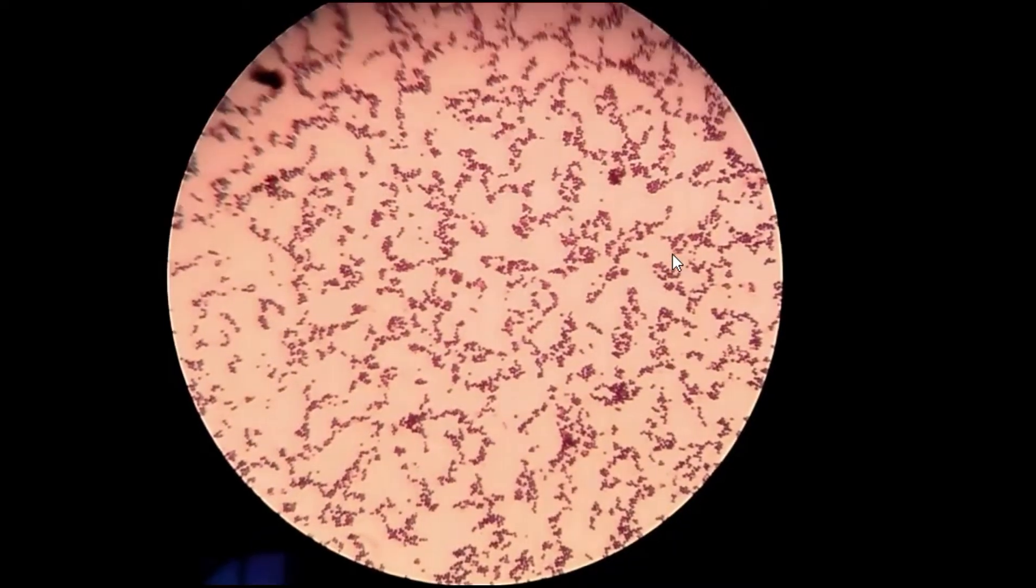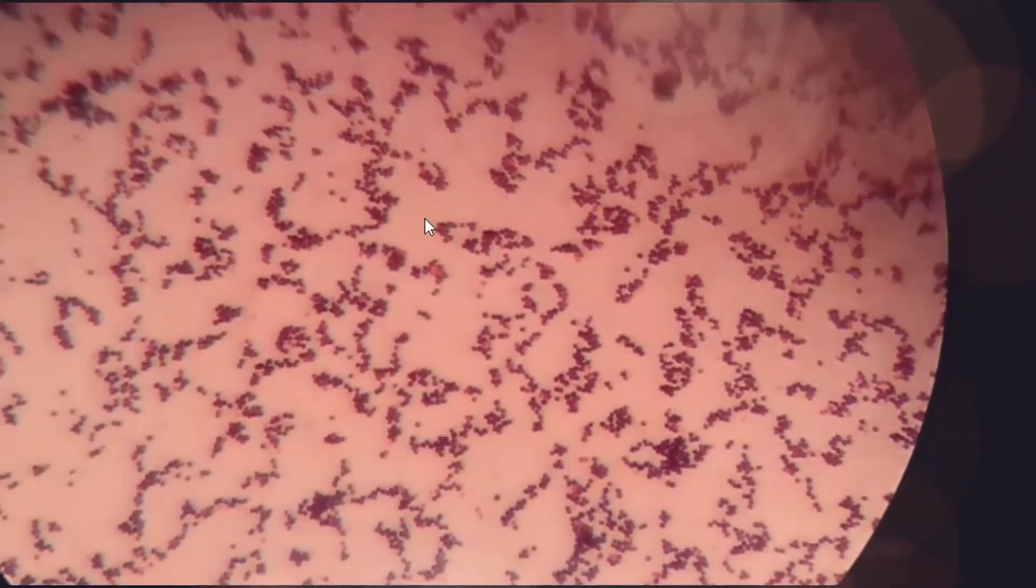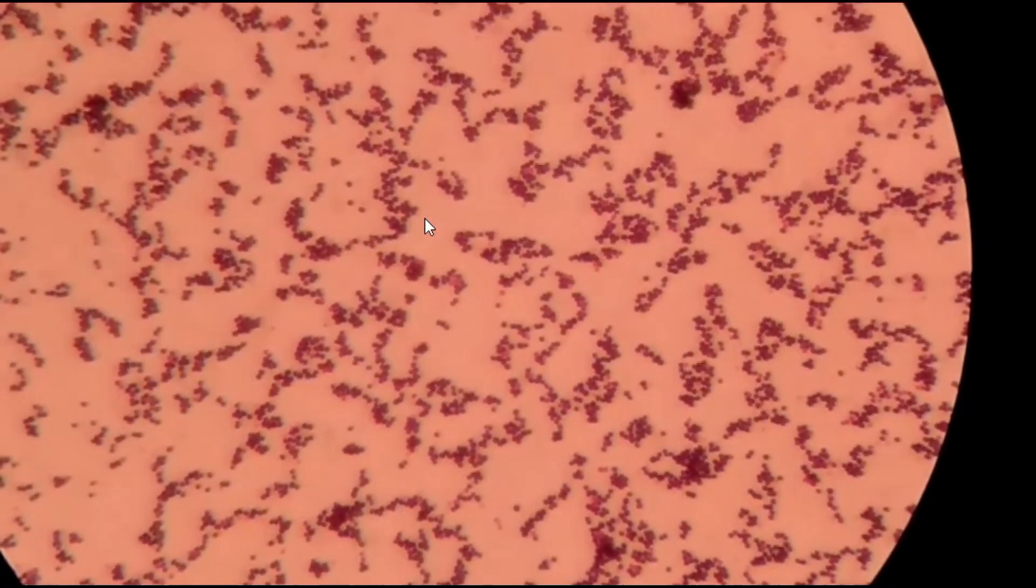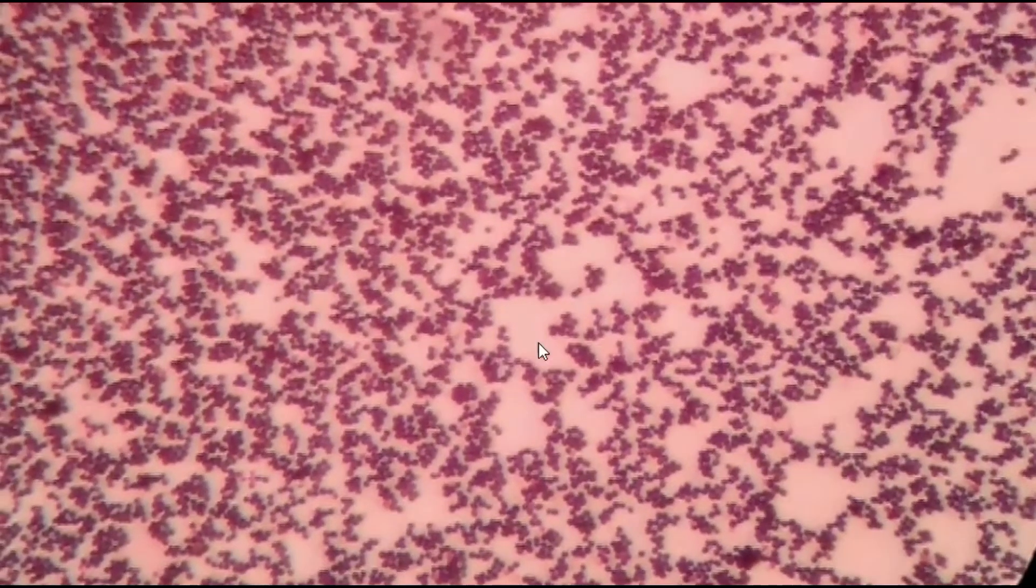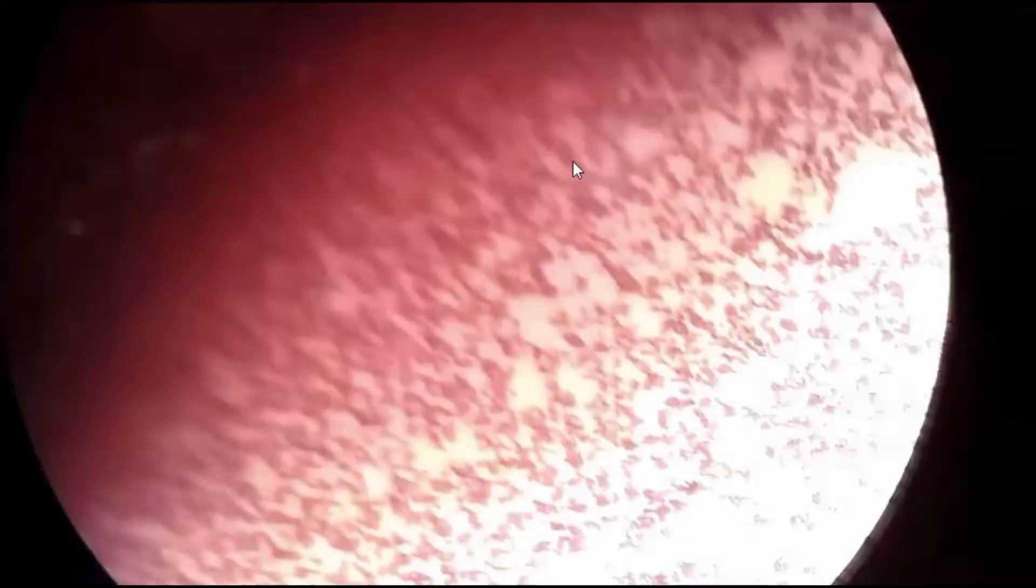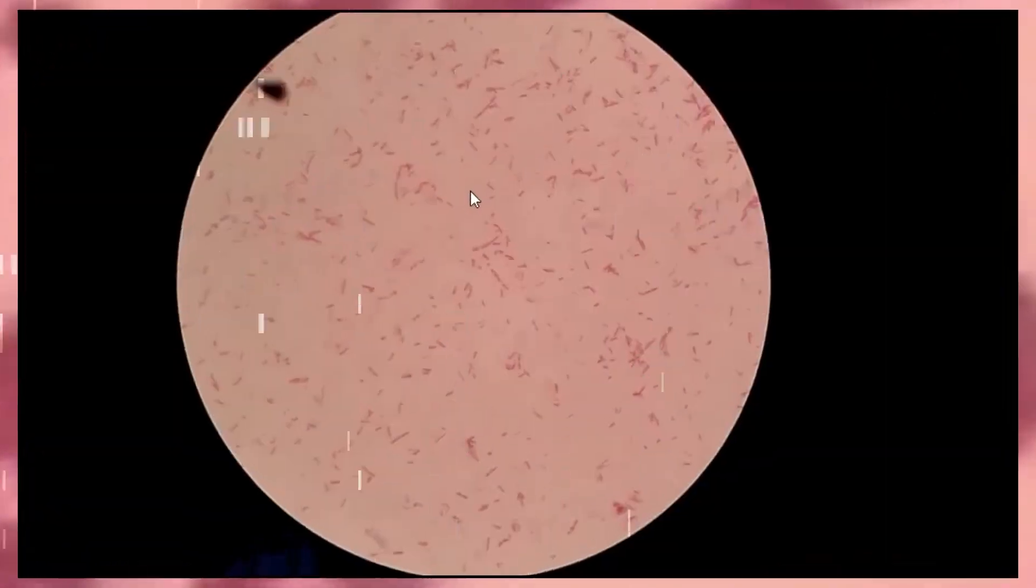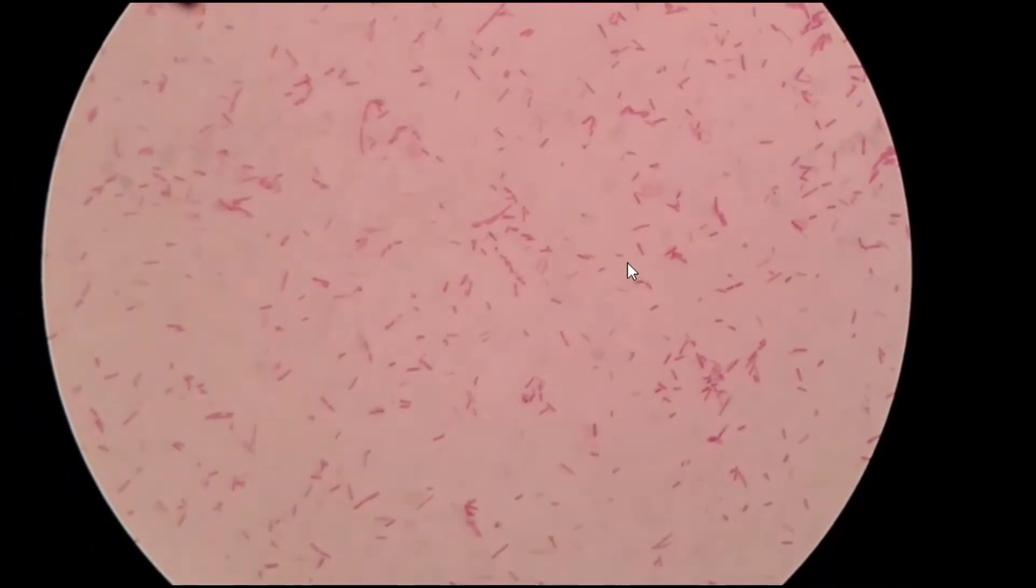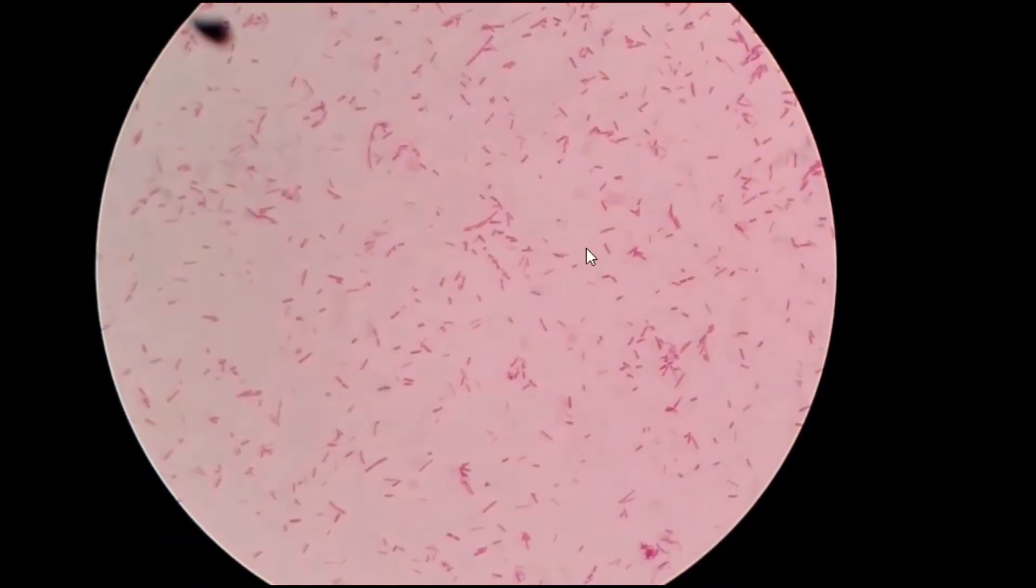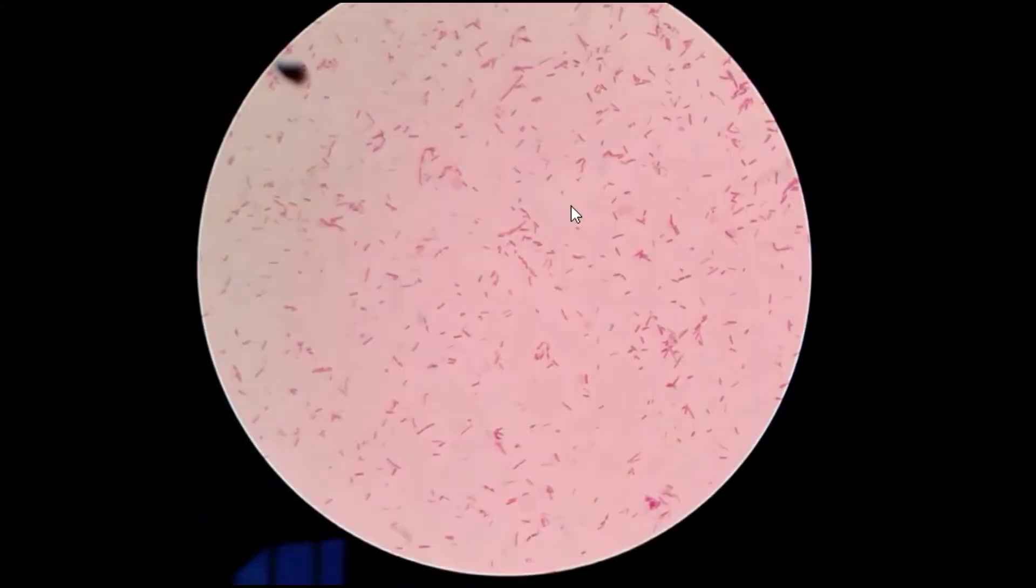Here you can see purple color, so the organism is gram positive. Pink in color, so gram negative, rod shape. That's why you can say gram negative bacilli or gram negative rod.